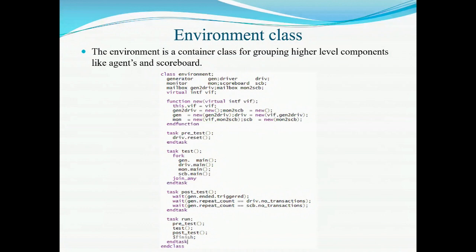First we will move on to the environment class. The environment is a container class for grouping higher level components like agents and scoreboard. It contains mailbox, generator, driver, monitor, and scoreboard. We created handles for generator, driver, monitor, and scoreboard. Next we created two mailboxes: one is gen-to-drive and another is monitor-to-scoreboard. The gen-to-drive mailbox is shared between generator and driver, and monitor-to-scoreboard is shared between monitor and scoreboard to enable communication between them. In the constructor method, objects of all components — mailbox, generator, driver, monitor, and scoreboard — are created, and the interface handles are passed to the new method.